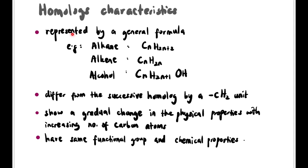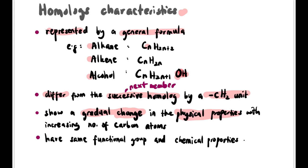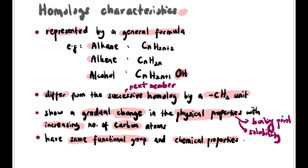Now let's look at the characteristics of homologs. First, they are represented by a general formula — for example, alkane CₙH₂ₙ₊₂, alkene CₙH₂ₙ, alkyne CₙH₂ₙ₋₂. Second, homologs differ from successive members by a CH₂ unit. Third, they show a gradual change in physical properties — including boiling points and solubility — with increasing number of carbon atoms. Fourth, homologs have the same functional group and therefore the same chemical properties.